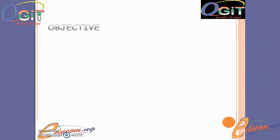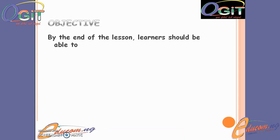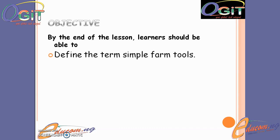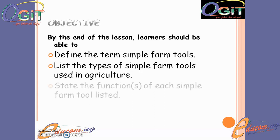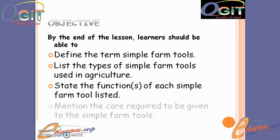The objectives of today's class: by the end of the lesson, learners should be able to: one, define the term simple farm tools; two, list the types of simple farm tools used in agriculture; three, state the functions of each simple farm tool listed; and lastly, mention the care required to be given to simple farm tools.